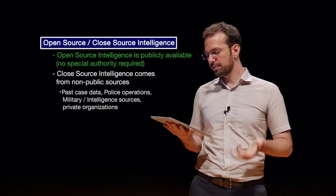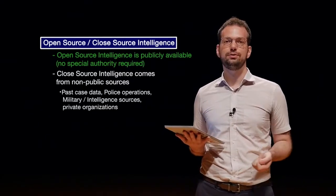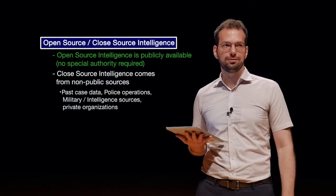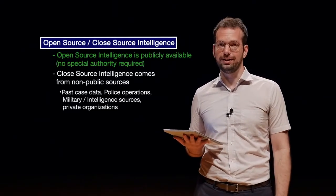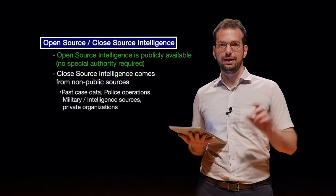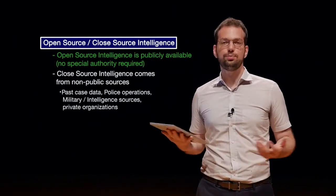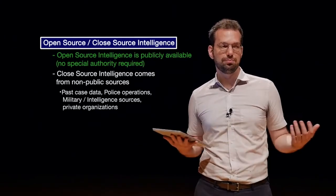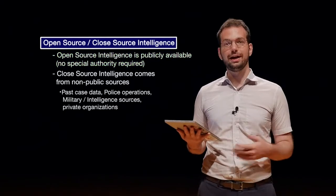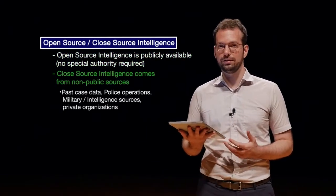Open source intelligence is publicly available and there's no special authority required. So anything that you publish on Facebook, for example, if you do not restrict it and anyone can access that information, then it's considered publicly available and law enforcement or anyone else can access it and use that information basically however they want.